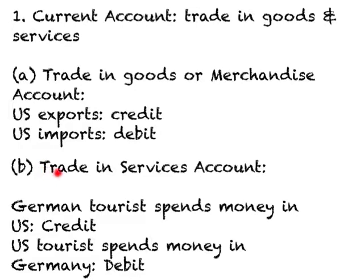Then we have the trade in services account. Services include things like tourism, travel, shipping, banking, insurance, and finance. For example, if a German citizen comes to the US and spends money here, the US is receiving money, so this expenditure by the German tourist is considered a credit side entry. If a US citizen travels to Germany and spends money there, the US is paying foreigners, so it is entered as a debit side entry.